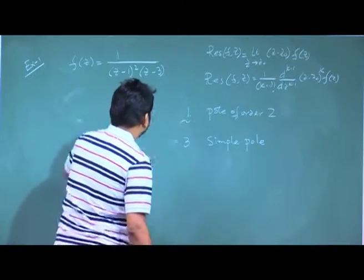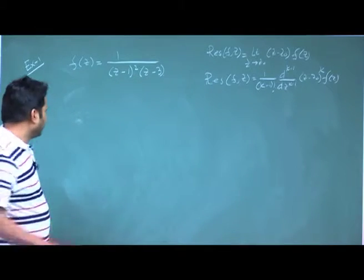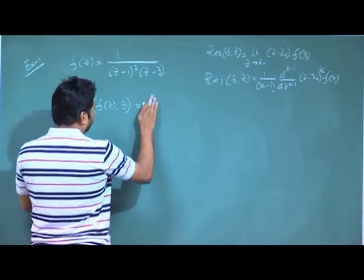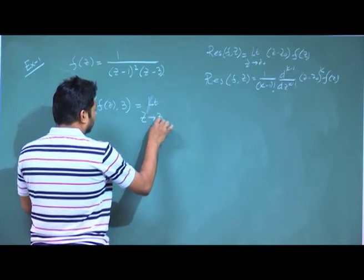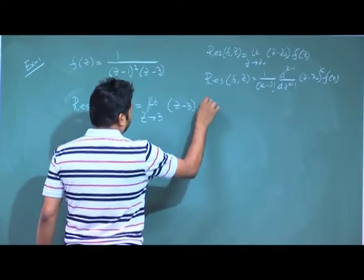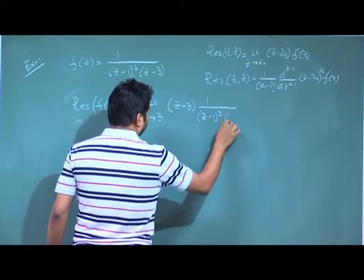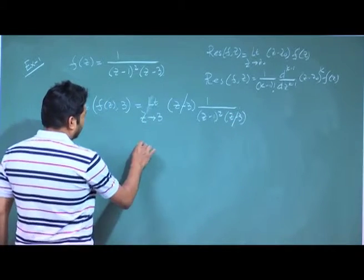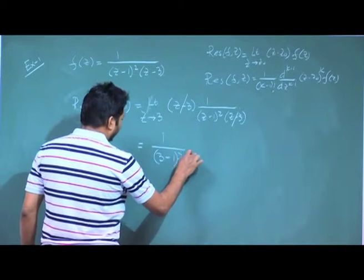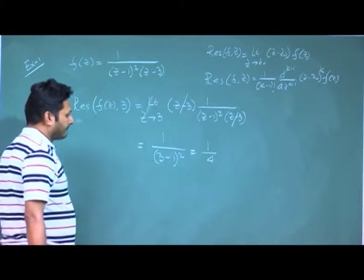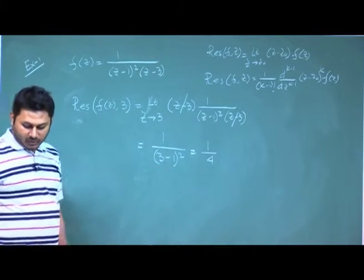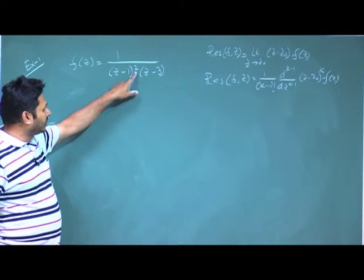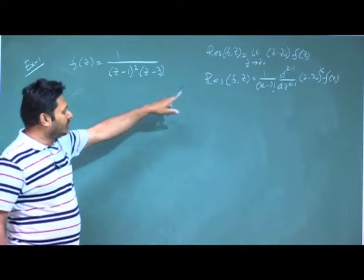To find the residue of f(z) at z = 3, we take the limit as z → 3 of (z - 3)·f(z) = (z - 3)/[(z-1)²(z-3)]. The (z - 3) cancels, and putting in the limit gives 1/(3-1)² = 1/4. So the residue at z = 3 is 1/4. For the residue at z = 1, since it is a pole of order 2, we must use the second recipe involving a derivative.